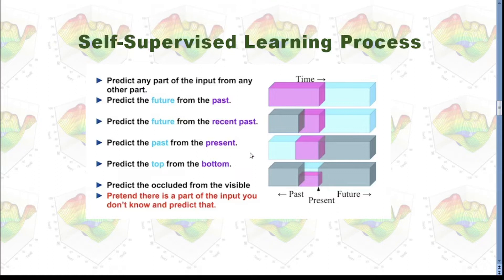This is how the self-supervised learning process looks like. We will try to use data to make predictions. We can predict the future from the past, or predict the future from the recent past, or predict the past from the present, or predict the top from the bottom. In general, we are using this purple part of the data to try to make predictions about the cyan part.